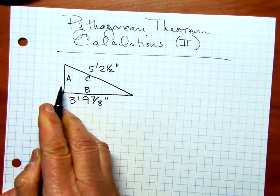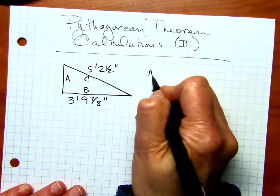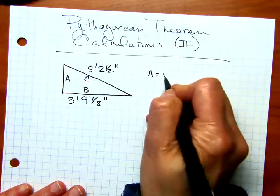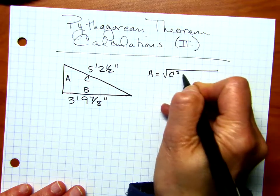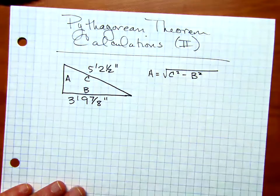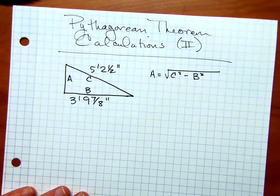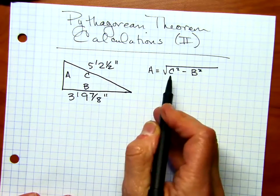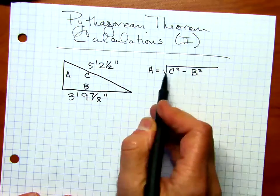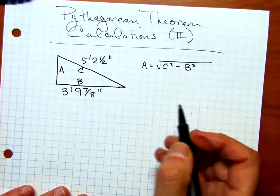So knowing that I want to solve for A, I want to write down the formula for A, which is going to be the square root of C squared minus B squared. The next thing is we want to plug in our numbers into this formula here.